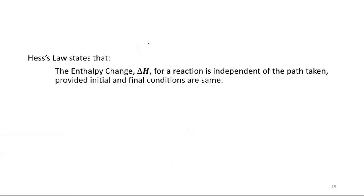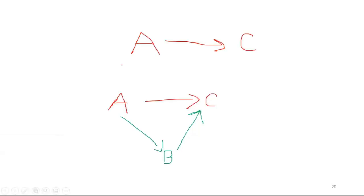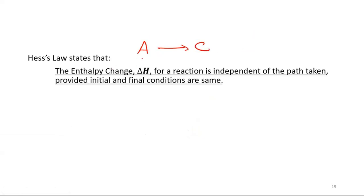Say that there is a reaction A to C. If there is an alternative reaction to B, then A to C, you can go A to B and B to C. If you say that there is an alternative reaction from both methods, then there is no difference in delta H.